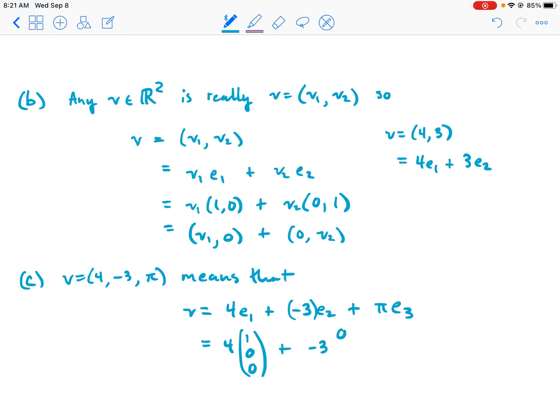That v is equal to 4e1 plus (-3)e2 plus πe3. And you can see that. Just now I'll write them as column vectors.